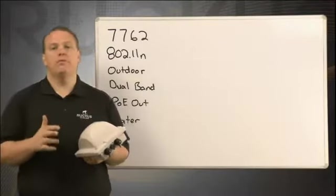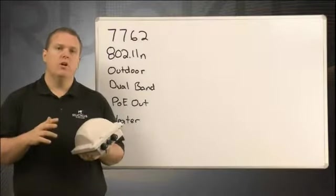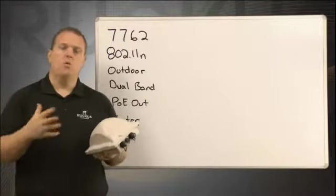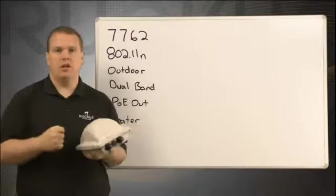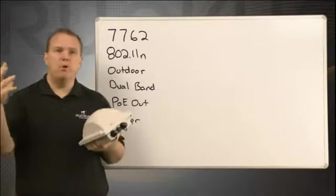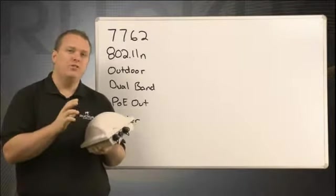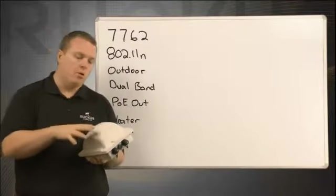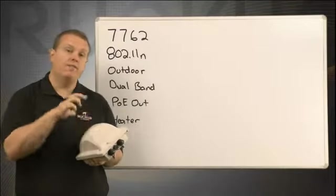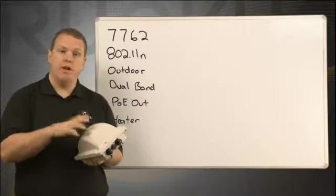A good example of using the 7762 could be in a stadium environment or an outdoor campus area of a college. You have lots of poles, lots of light poles, cables, but you don't have any way to wire each of them. Well, with the built-in 2.4 and 5 gigahertz radios, you can mesh with that.